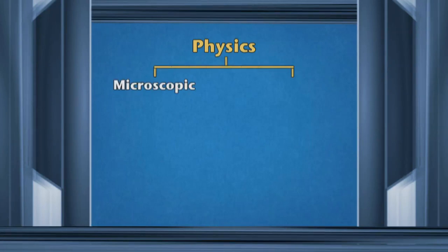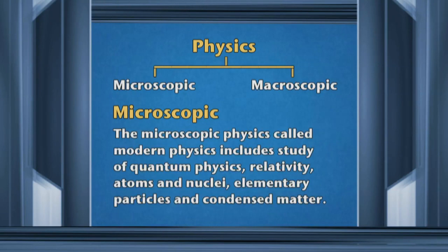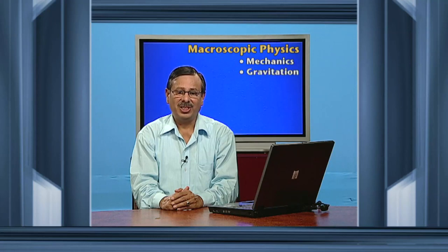There are two types of domain which are the interest of physics: microscopic and macroscopic. In the macroscopic domain, we study phenomena involving objects of finite size — terrestrial size or astronomical scales — and this model is known as classical physics. In the microscopic domain, we learn about very small particles like elementary particles, theory of relativity, atoms, nuclei, and other particles. Classical physics developed up to the year 1900 and includes the study of mechanics, gravitation, heat, sound, light, electricity, and magnetism. When we talk about microscopic, we study quantum physics and the theory of relativity. An important thing: learning without thought is labor lost — this is the soul of physics.